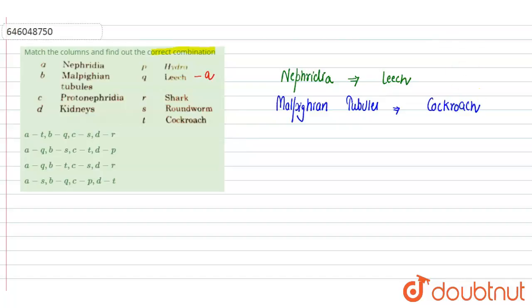Now protonephridia - protonephridia these are present in the Aschelminthes. So we can say that the phylum members, the various members in which protonephridia act as excretory organ, that is the roundworms. In roundworms these protonephridia are the excretory organs. Here we can write it as roundworms.